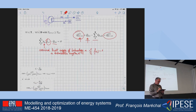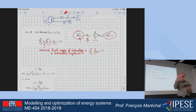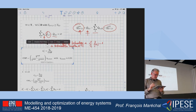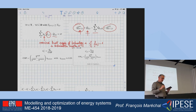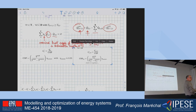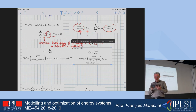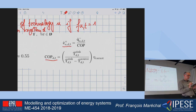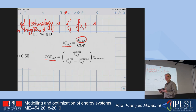Now I'm going to calculate the electricity consumption. I have the level of usage but I don't know the electricity consumption yet. I'm going to use the same formula as before to calculate the amount of electricity needed by a given system supplying a certain amount of heat to a given temperature level, by calculating the COP as explained before.